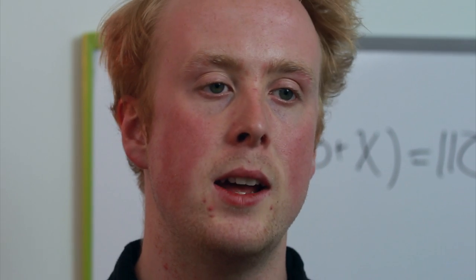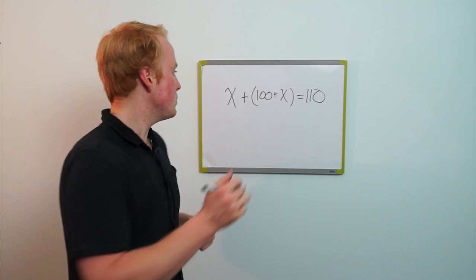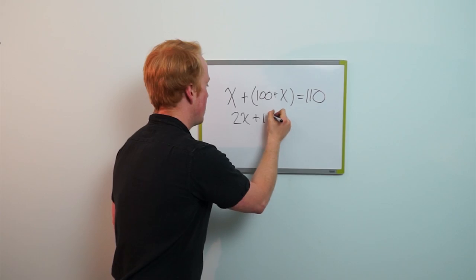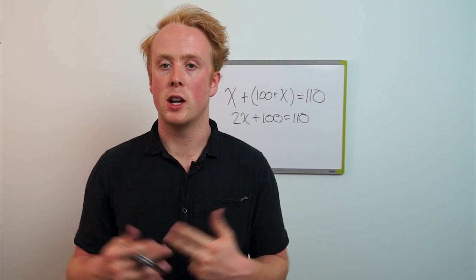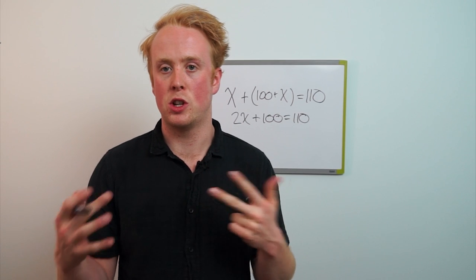So we're going to go ahead and start off by simply removing the brackets around the x plus one hundred because we can, because it's commutative, and make it two x plus one hundred is equal to one ten.